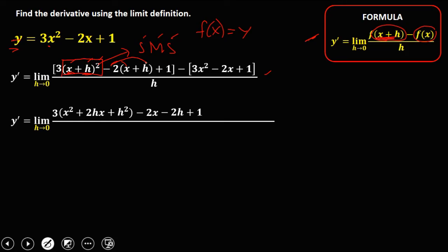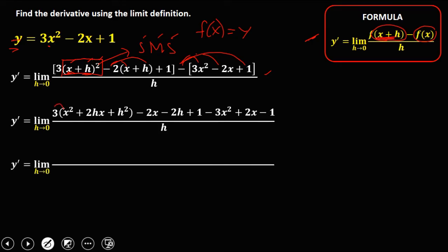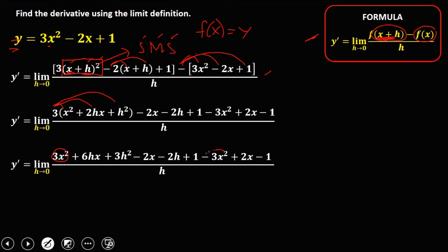For the second term, distribute the negative: negative 3x squared, and negative times negative gives positive 2x, and negative 1, all over h. Then simplify: 3 times x squared is 3x squared, 3 times 2hx is 6hx, 3 times h squared is 3h squared, then copy the remaining terms over h. Combining like terms: positive 3x squared and negative 3x squared cancel; negative 2x and positive 2x cancel; positive 1 and negative 1 cancel. We now have 6hx plus 3h squared minus 2h over h.